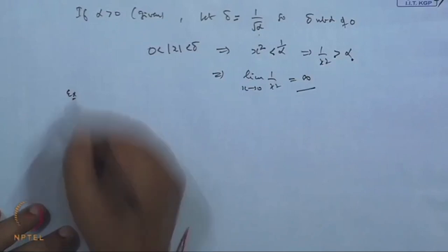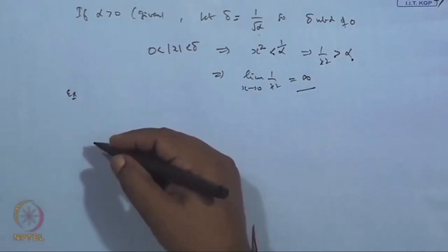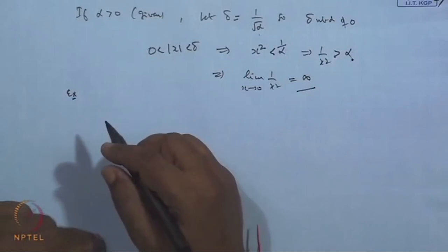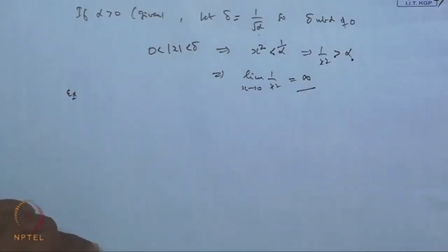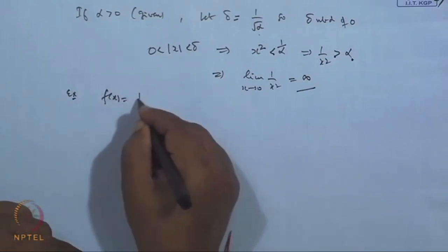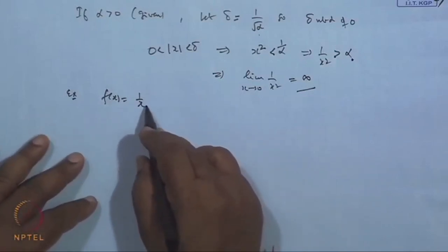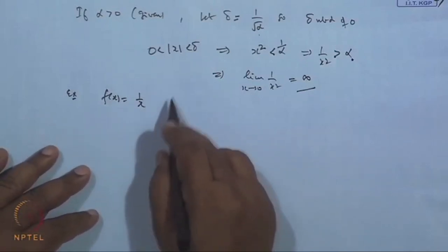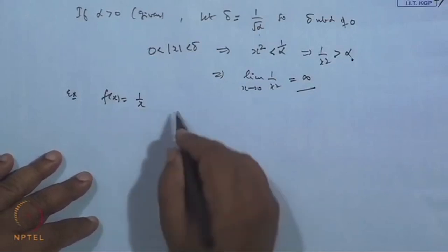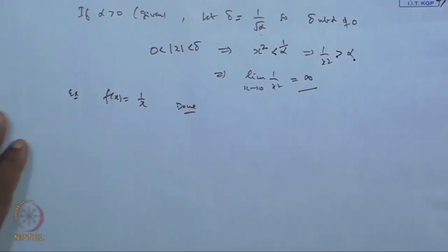Another example: f(x) = 1/x. We have already seen that lim(x→0⁺) 1/x = +∞ and lim(x→0⁻) 1/x = −∞, so these are already established.